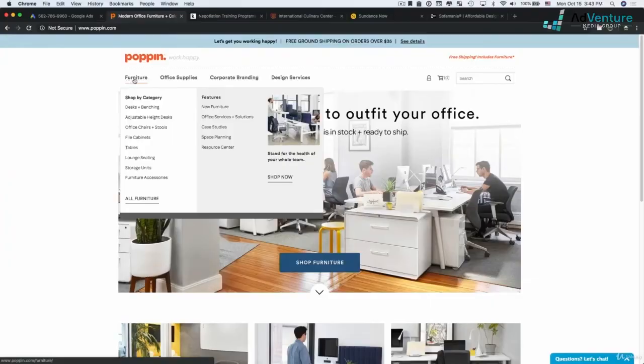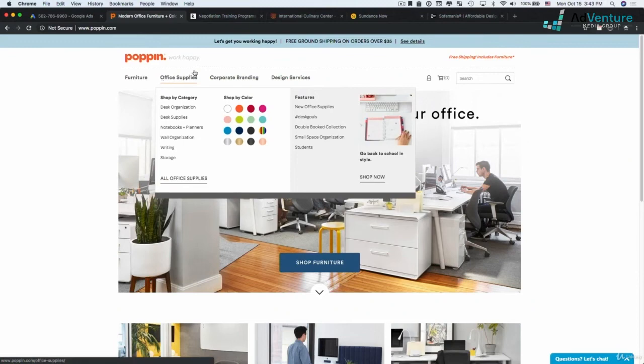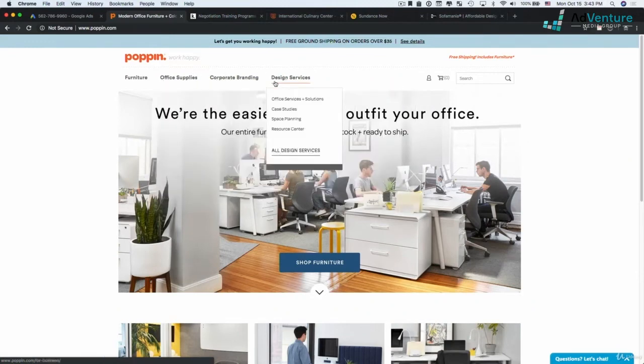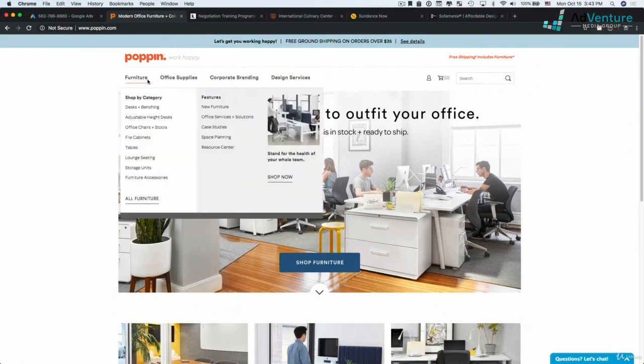In this case, there's two different ways that are obvious to me that you could start off building out these campaigns. One is I could have my campaign set up at the top level categories of this navigation. So I can have a campaign for furniture, a campaign for office supplies, a campaign for corporate branding, and a campaign for design services.